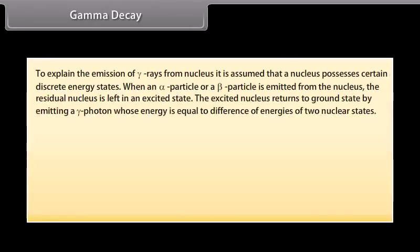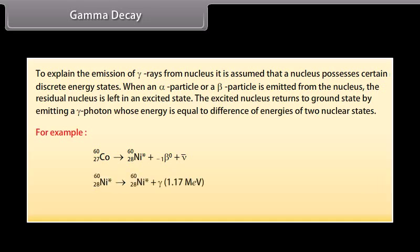Gamma decay. To explain the emission of gamma rays from nucleus, it is assumed that a nucleus possesses certain discrete energy states. When an alpha particle or a beta particle is emitted from the nucleus, the residual nucleus is left in an excited state. The excited nucleus returns to ground state by emitting a gamma photon whose energy is equal to difference of energies of two nuclear states. For example, cobalt nucleus with mass number 60 and atomic number 27 transforms into nickel nucleus with mass number 60 and atomic number 28 in its excited state. The excited nickel nucleus with mass number 60 and atomic number 28 returns into ground state by emission of two successive gamma photons of energies 1.17 MeV and 1.33 MeV.